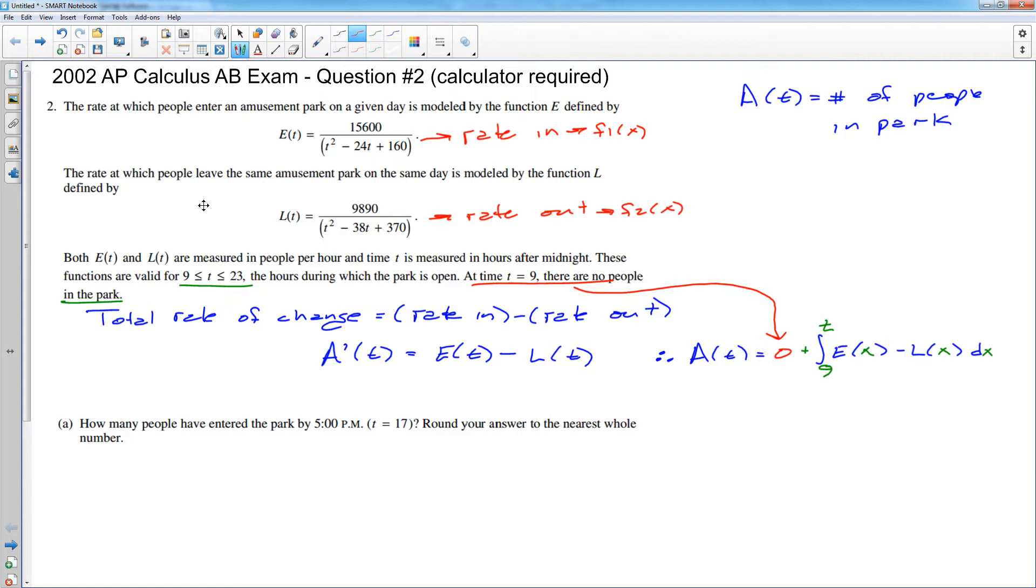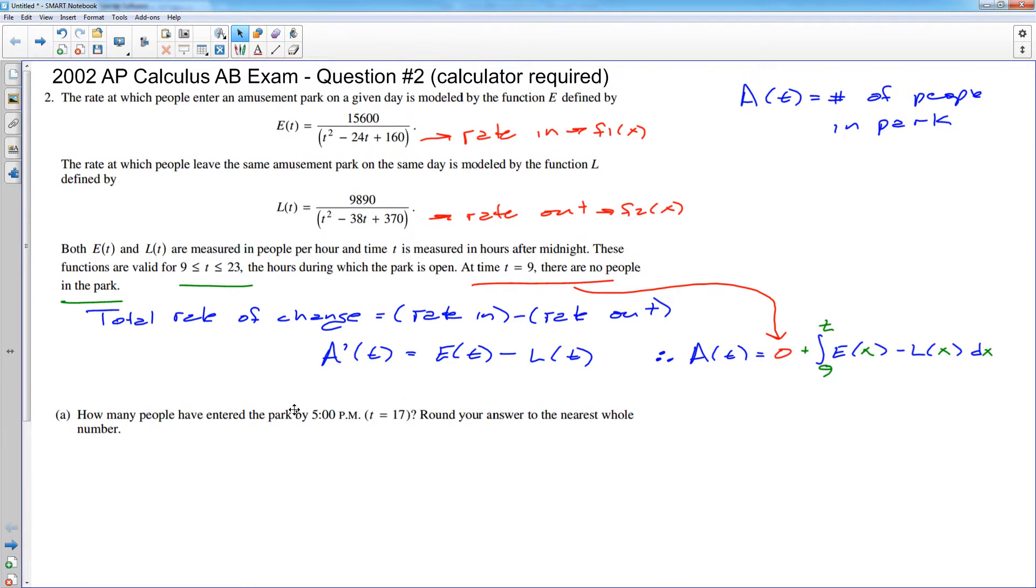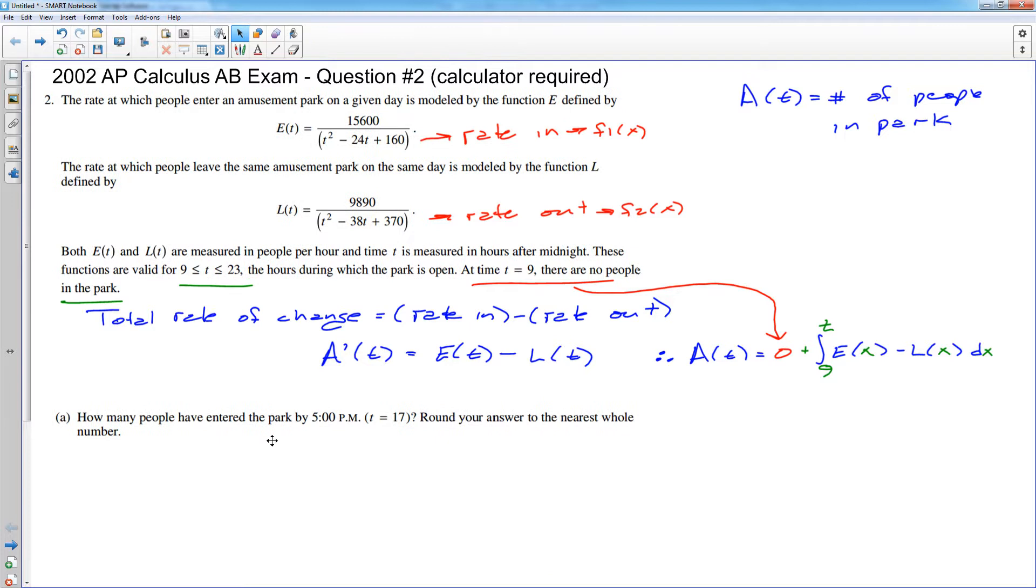So all of that said, that's just an intro to the problem. Part A, how many people have entered the park by 5 p.m.? Well, we are given the function E of T, which is the rate that people go in. Part A is asking how many actual people go in. So to go from the rate to the total number.